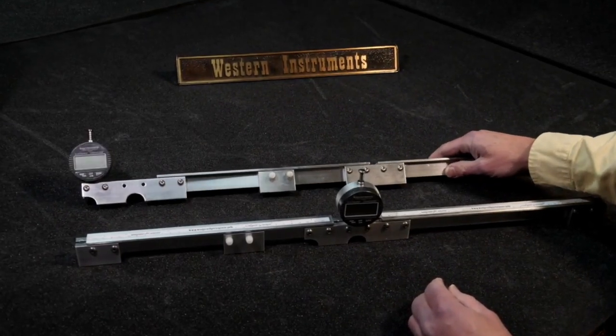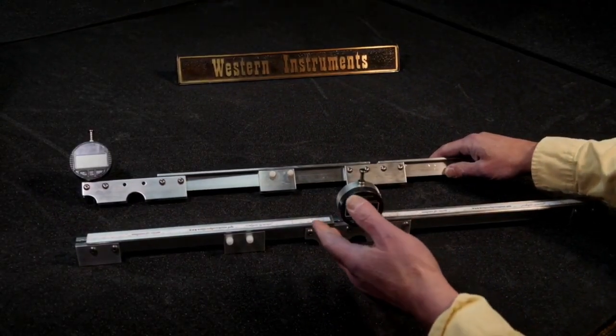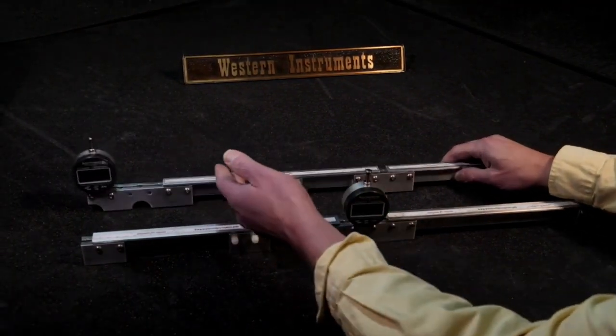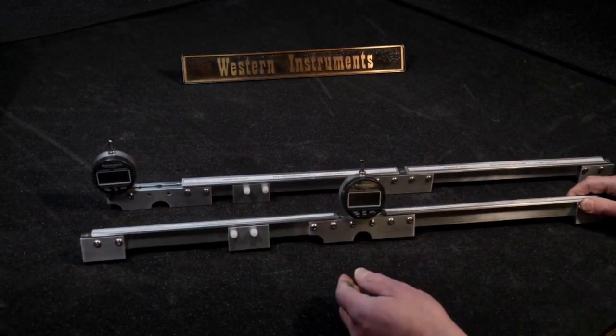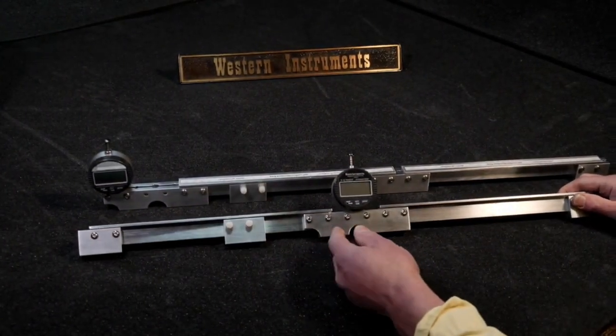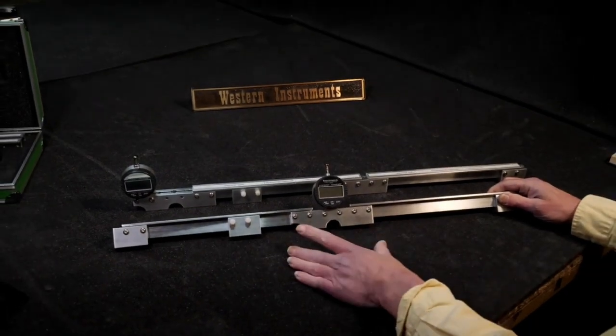The gauge can be configured in cantilevering mode where we cantilever into an area of weight loss corrosion, and in spanning mode where we span across the area of corrosion.